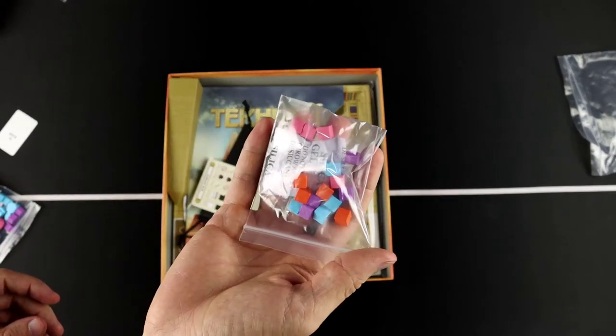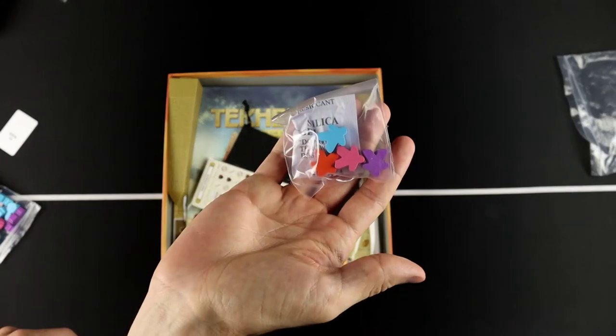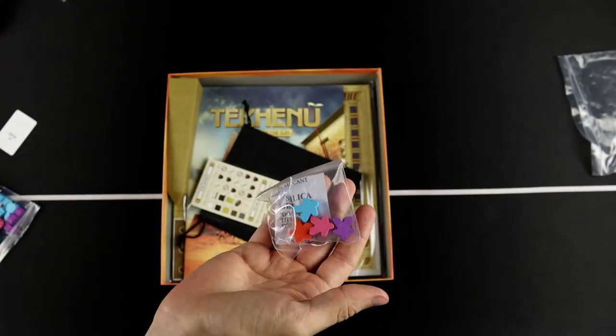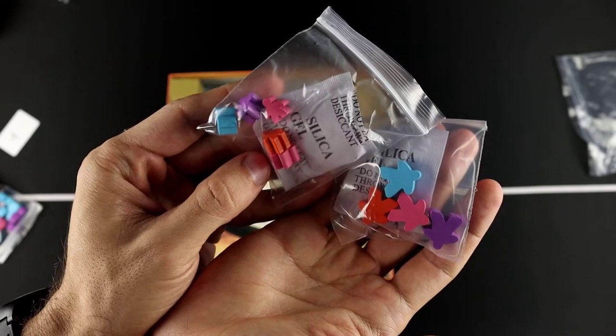And then just some small cubes. And then some bigger meeples. So we've got the baby meeples and the bigger meeples. All right, so you can kind of see the difference there inside.